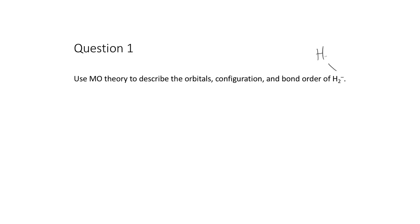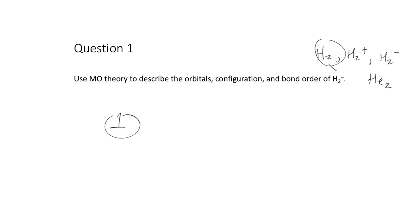Let's describe a couple of different molecules: H2, H2 with a positive charge versus H2 with a negative charge, and maybe even look at helium too. Using MO theory, we can have a 1s orbital. Picture H2 — imagine we have one electron in a 1s orbital spinning around like this.